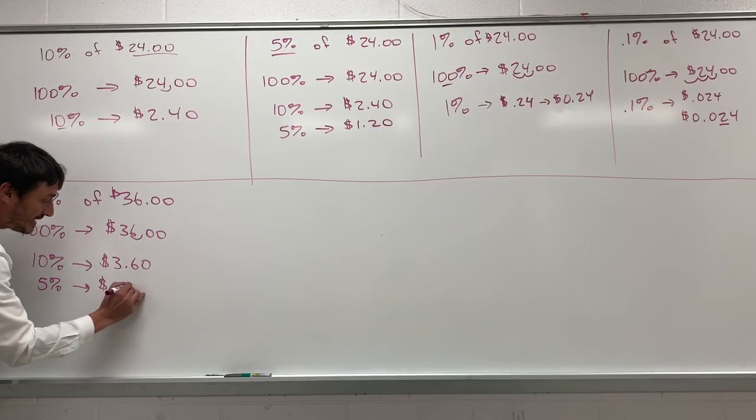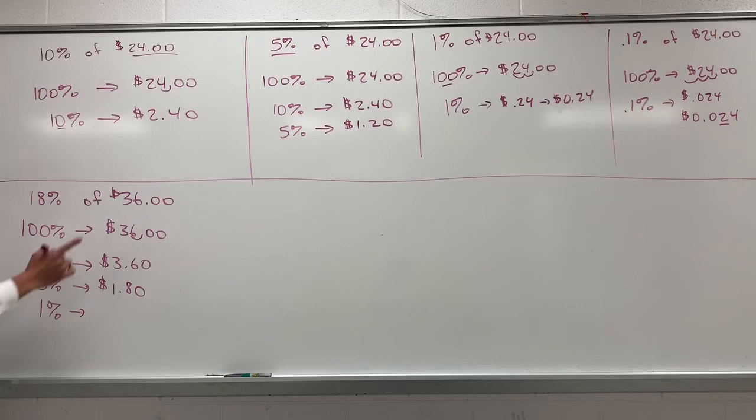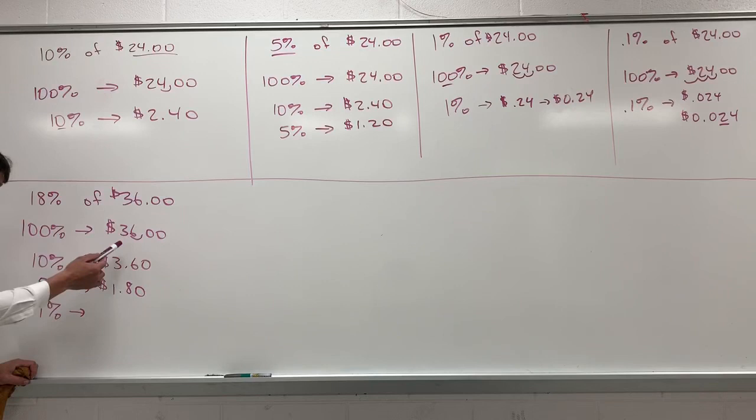And lastly, we want to find our 1%. We're not going to need a 0.1% only in, like I said, in tax calculations normally. But 1% of $36 would be moving the decimal two places or a movement of two decimal places would give us $0.36.